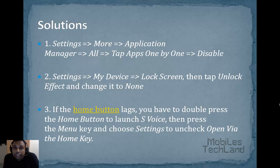Number three: if the home button lags, double press the home button to launch S Voice, then press the menu key and choose Settings to uncheck 'Open via the home key'.